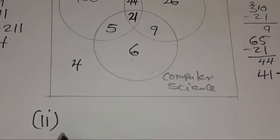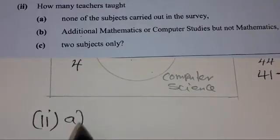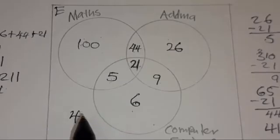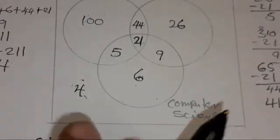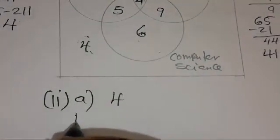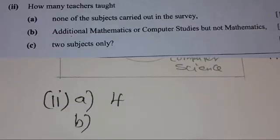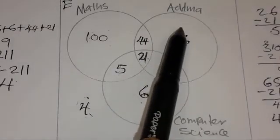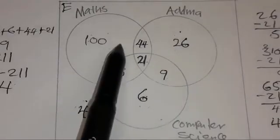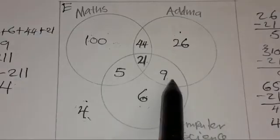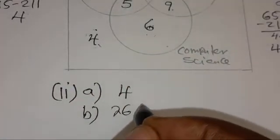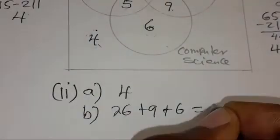Part ii-A: how many teachers taught none of the subjects? That's just the 4 teachers in the universal set outside all circles. Part ii-B: how many teachers taught additional mathematics and computer science but not mathematics? Mathematics is excluded, so we add ADMA-only, the ADMA∩CS region, and CS-only: 26 + 9 + 6 = 41 teachers.